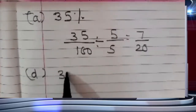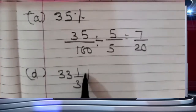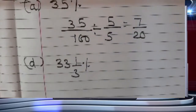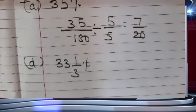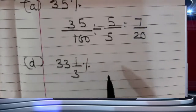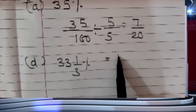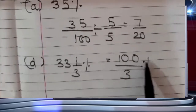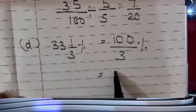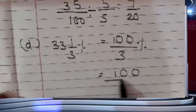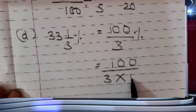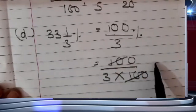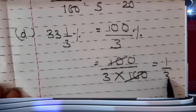Part D: 33 and 1/3 percent. Here it is a mixed fraction, so first I convert it to an improper fraction. 33 times 3 is 99, plus 1 is 100, so it becomes 100/3 percent. To remove the percent sign I write upon 100, giving 100/3 upon 100. The 100s cancel, so the answer is 1 upon 3.